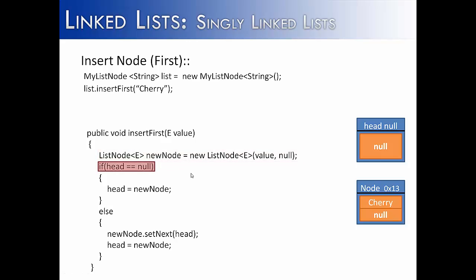Then we go to the if statement, which says if the head is equal to null. Well, right now the head is equal to null. So we're going to do what's inside of the if statement, and head equals new node. So this node now is the head. So head is pointing to this memory reference right here, which holds the first node.